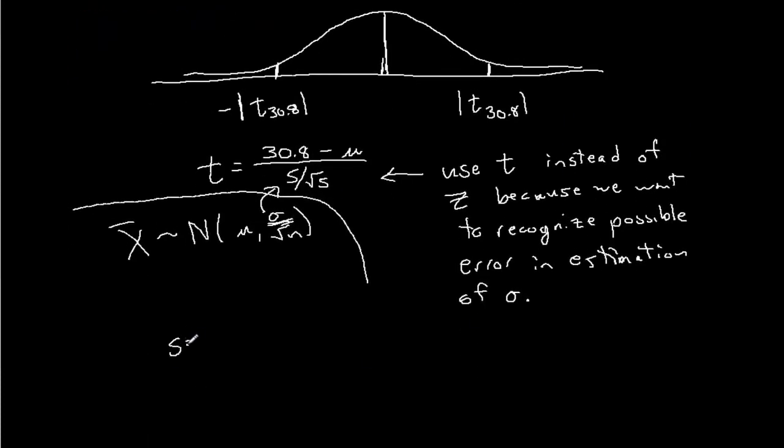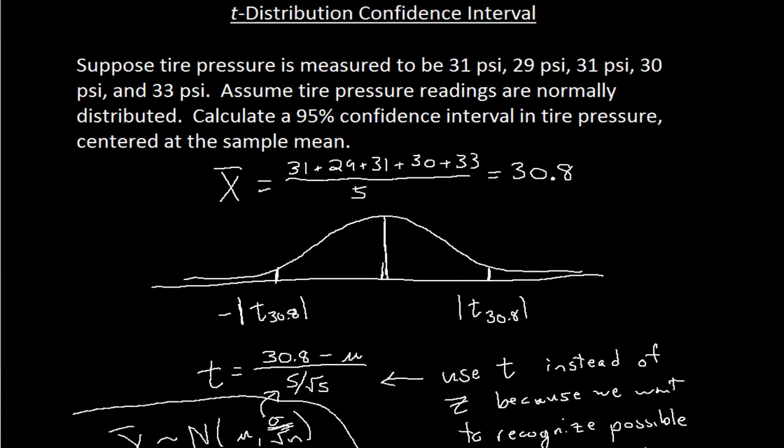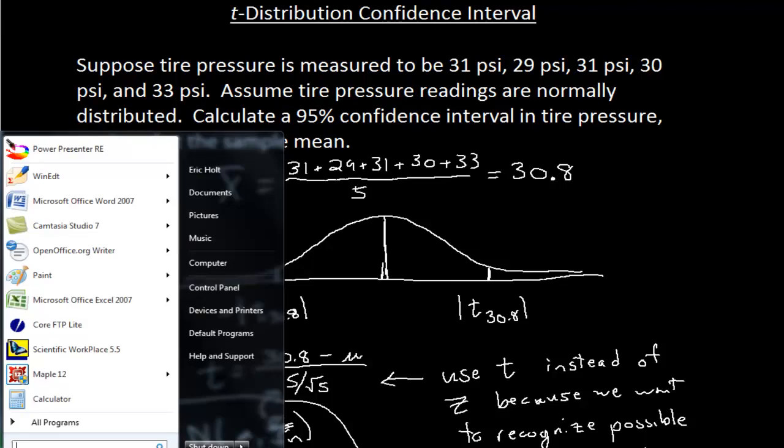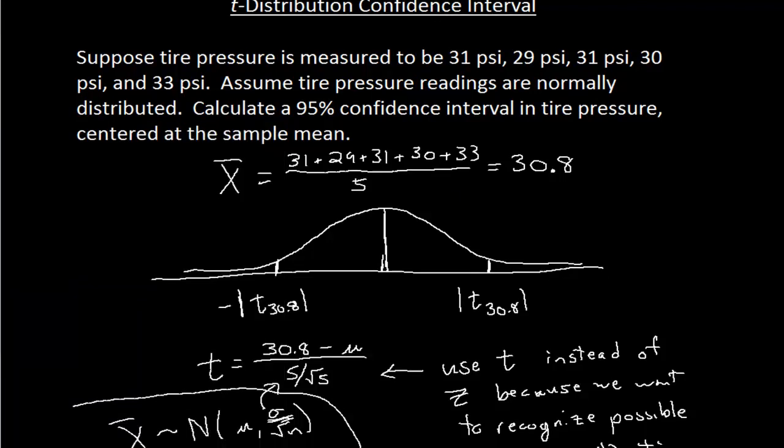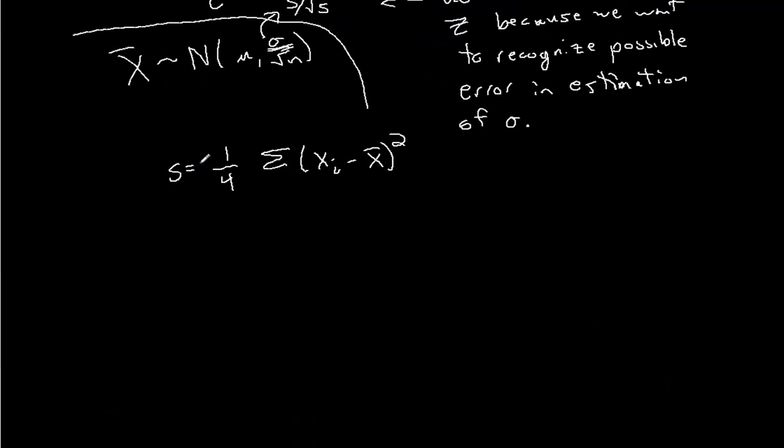So s here is one over n minus one, since we have five measurements, that'll be four times the sum of the x_i minus the sample mean squared. So what do we get there? I'll scroll up and use my calculator so I can see this. Whoops, excuse me, that was s squared. That wasn't s. So if I want s, I take the square root of that. Let's pull up the calculator here.